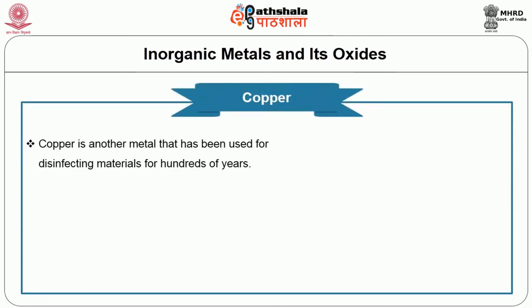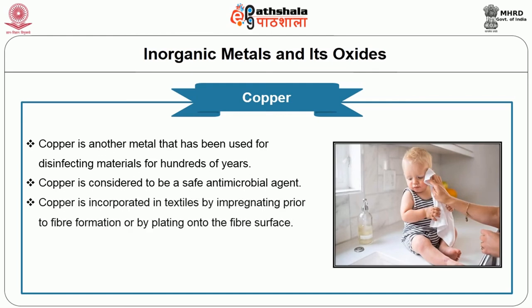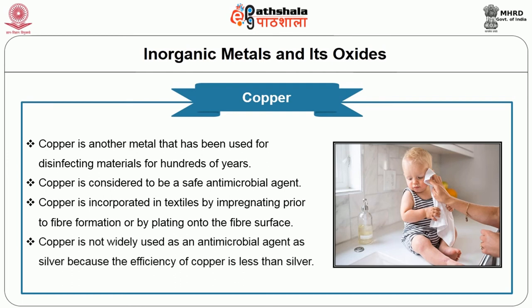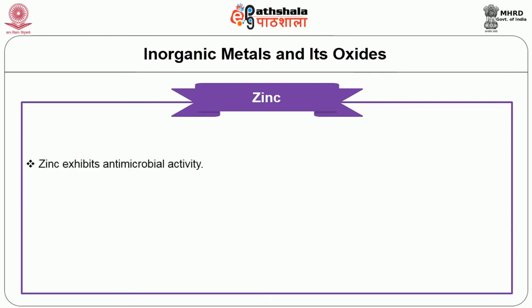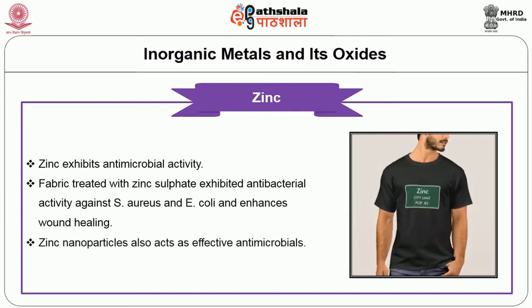Copper is another metal used for disinfecting materials for hundreds of years and is considered a safe antimicrobial agent. Copper is incorporated in textiles by impregnating prior to fiber formation or by plating onto the fiber surface. However, copper is not as widely used as silver because its efficiency is less than silver. Zinc also exhibits antimicrobial activity. Fabric treated with zinc sulfate exhibited antibacterial activity against Staphylococcus aureus and E. coli and enhances wound healing. Zinc nanoparticles also act as effective antimicrobials.